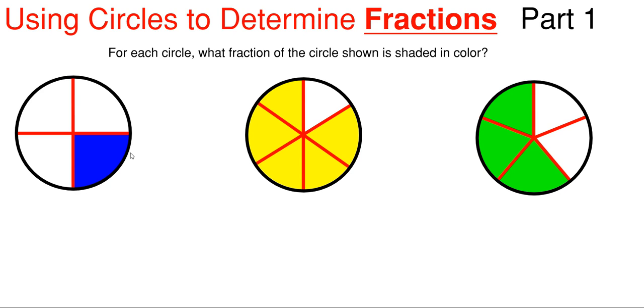So we have three circles here with colored portions and we have to determine what fraction of the entire circle is colored. Fractions will always be a number over another number, for instance, four over seven. The number in the top is called the numerator and the bottom number below the line is referred to as the denominator.